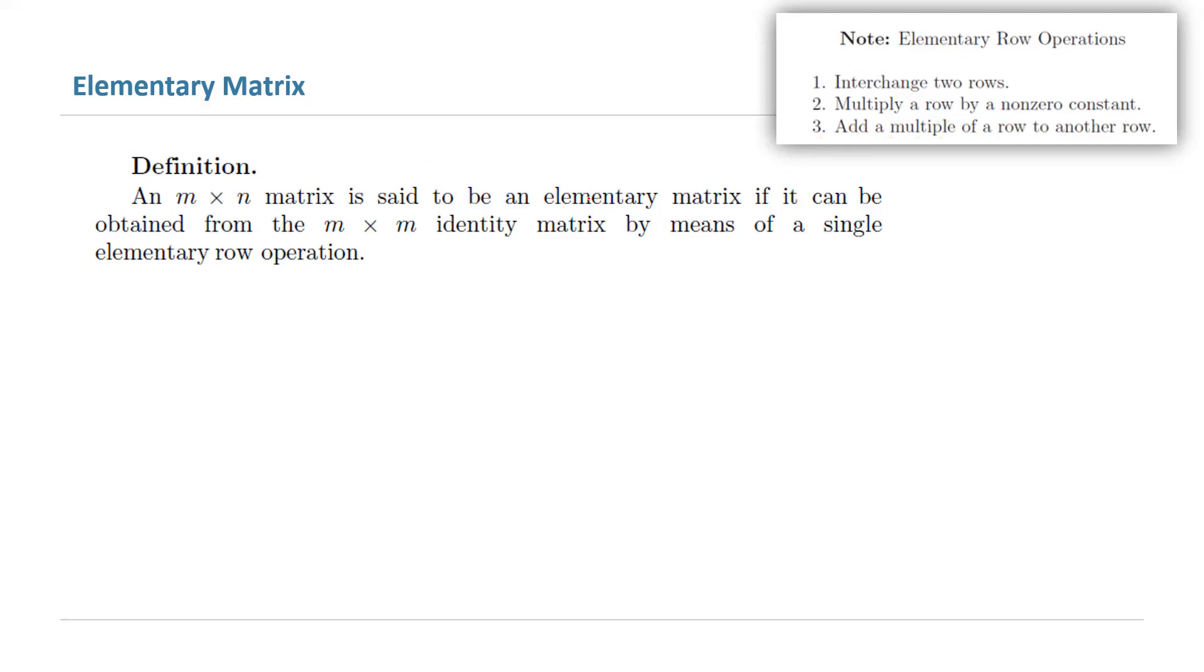An elementary matrix is a matrix obtained from the identity matrix by applying just one of these operations. One of them helps us make changes to the identity matrix and define an elementary matrix.